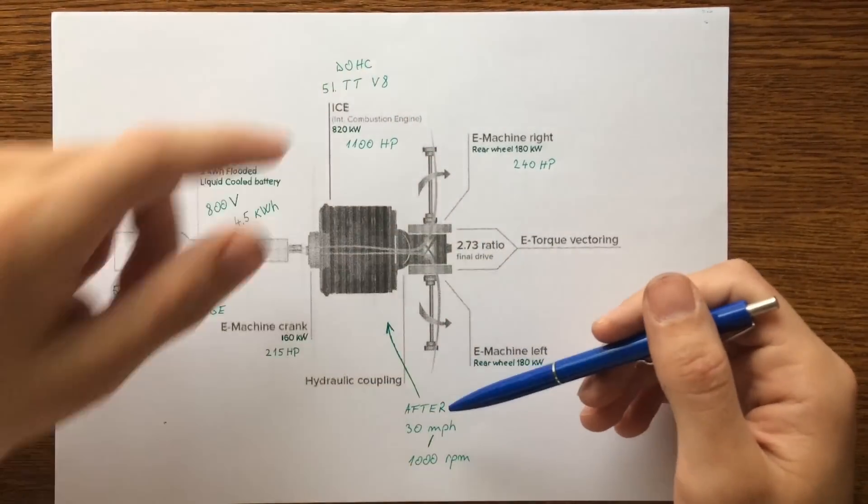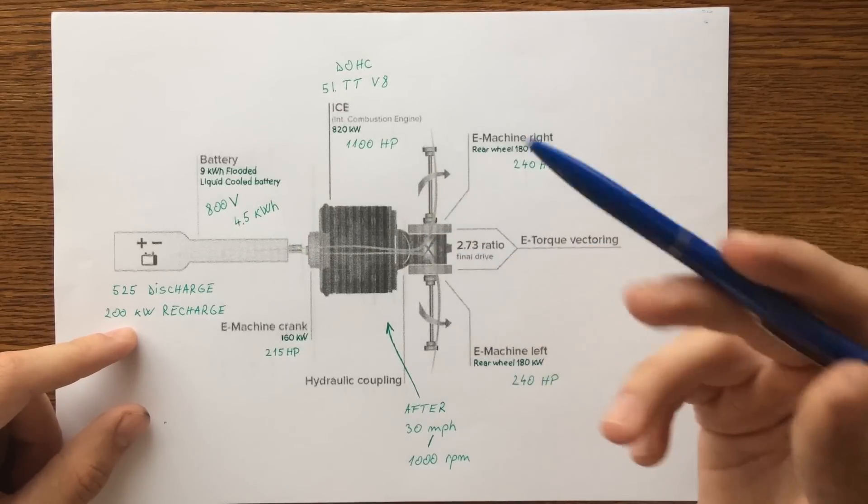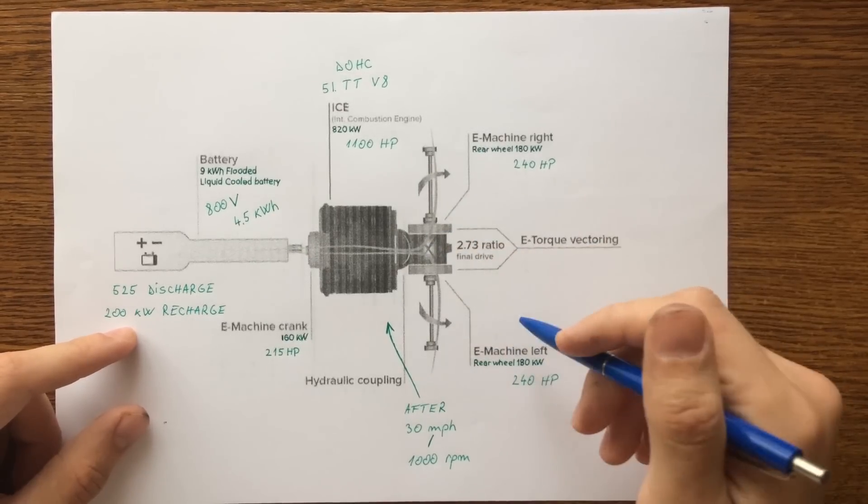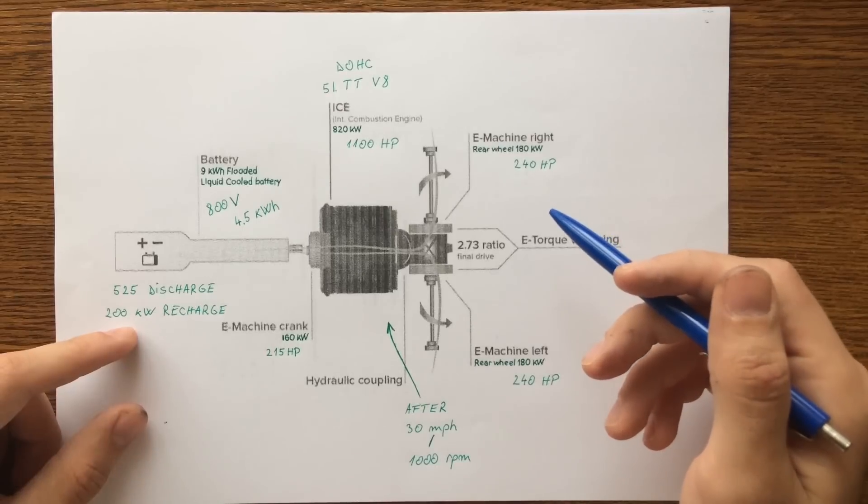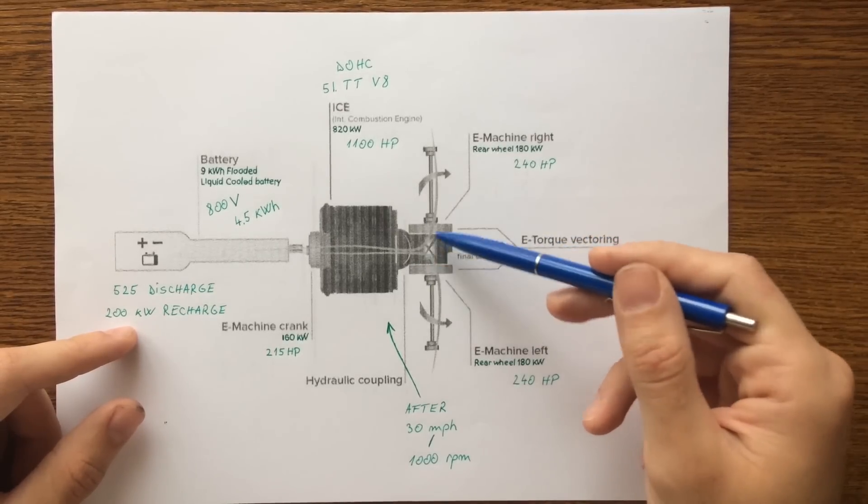Between the rear wheels and the differential, the car has another two electric motors that produce 240 horsepower each, placed like this.